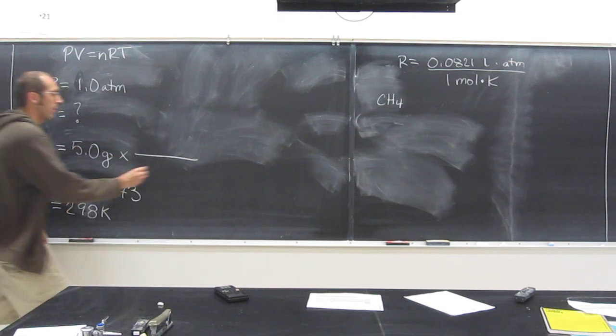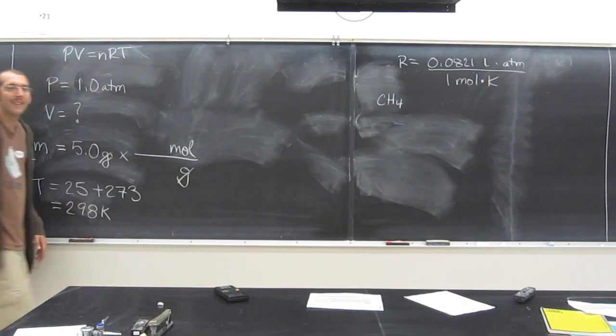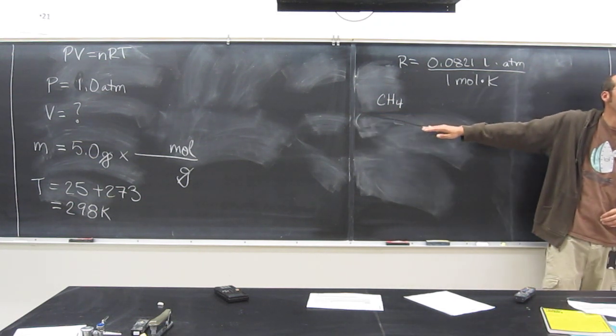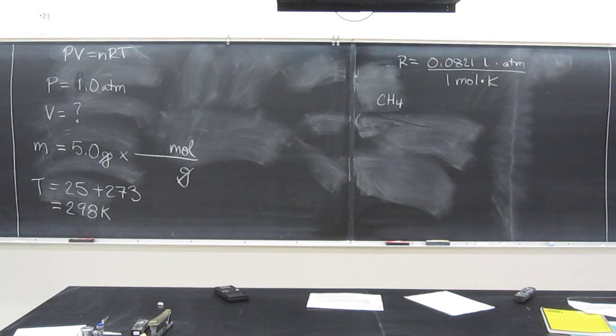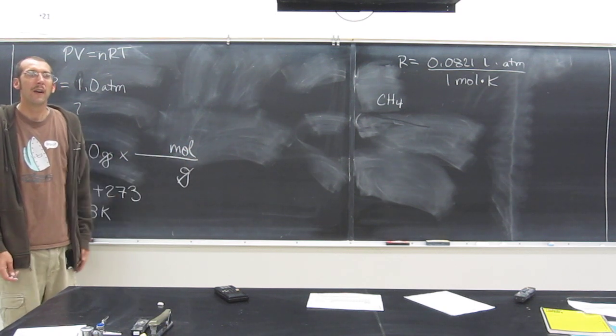So I want something that relates grams and moles. Does anybody know what does that? Anybody ever heard of anything that does that? No, that's Avogadro's number. The molar mass. That makes sense, right? The molar mass would be the mass of one mole. That's why we call it the molar mass. So that should be able to relate grams and moles, because grams is the unit of mass.